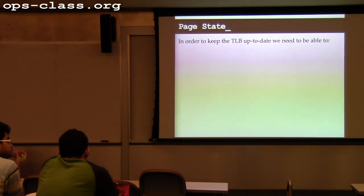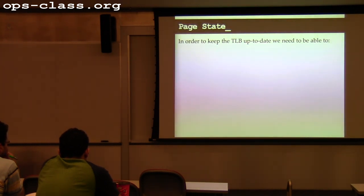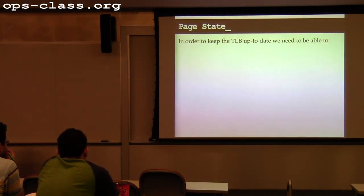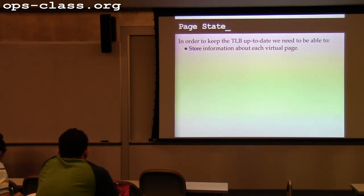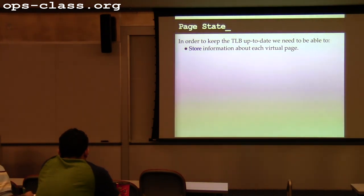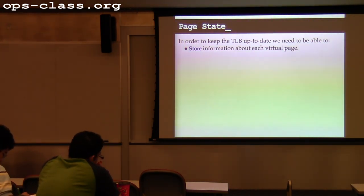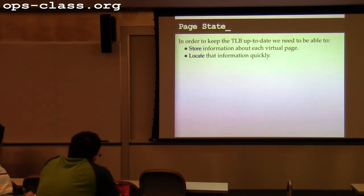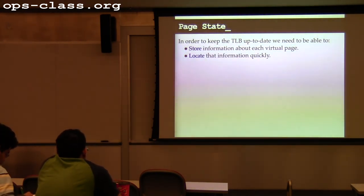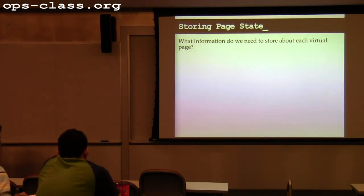The kernel needs to have information stored about every virtual address — or every virtual page — in use by any process. And on the page fault or TLB fault handling path, we want to look up that information quickly, because we've already stalled so the MMU can load the translation. We don't want to make things even slower. So what information do we actually need to keep about each page?